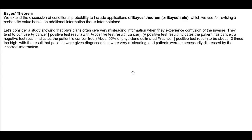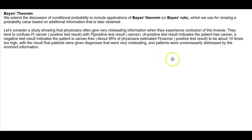Consider a study showing that physicians often give very misleading information when they experience confusion of the inverse. They tend to confuse the probability of cancer provided that you have a positive test result, and the probability of having a positive test result given that you have cancer. A positive test result indicates that the patient has cancer; a negative test result indicates the patient is cancer-free. About 95 percent of physicians estimated the probability of cancer given a positive test result to be about 10 times too high, with the result that patients were given very misleading diagnoses and were unnecessarily distressed by the incorrect information.